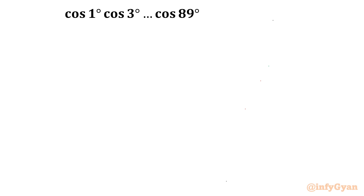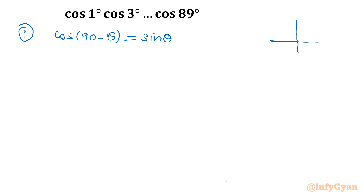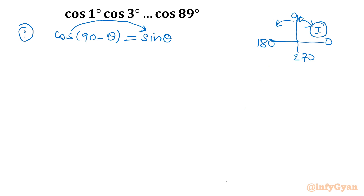Let us get started by writing the trig identity which I will use. It is called the complementary identity: cos(90° − θ) = sin θ. In the first quadrant, cosine flips into sine, and all ratios are positive, so there is no question of plus or minus. Similarly, sin(90° − θ) = cos θ.